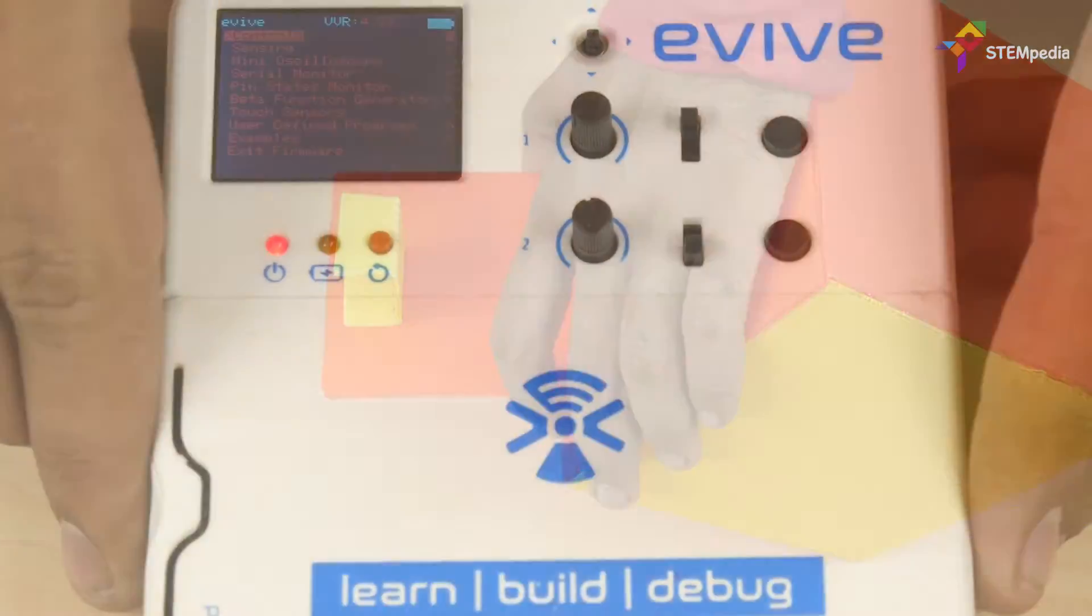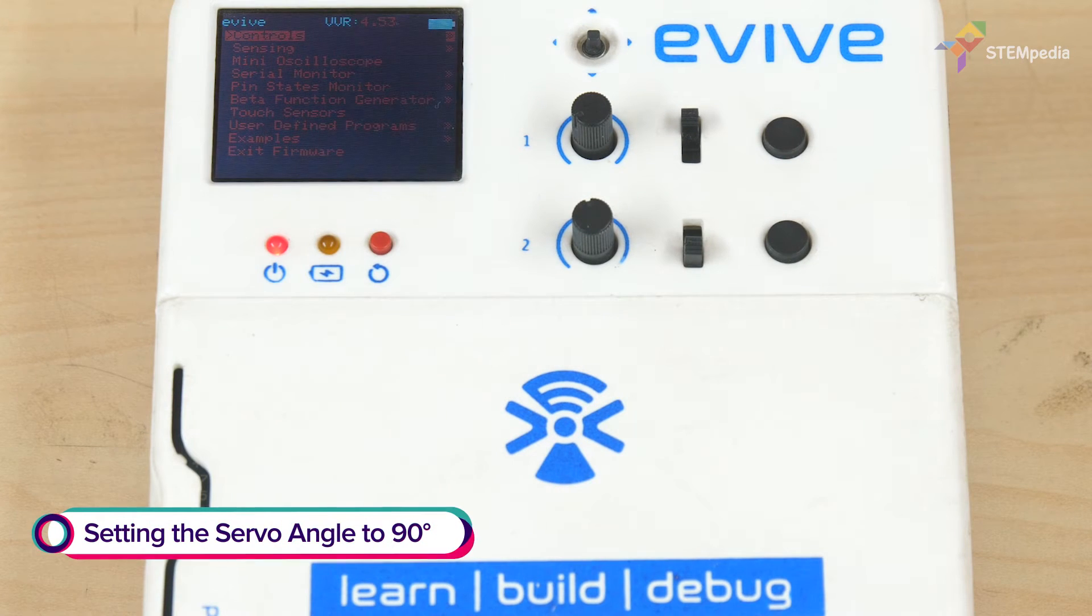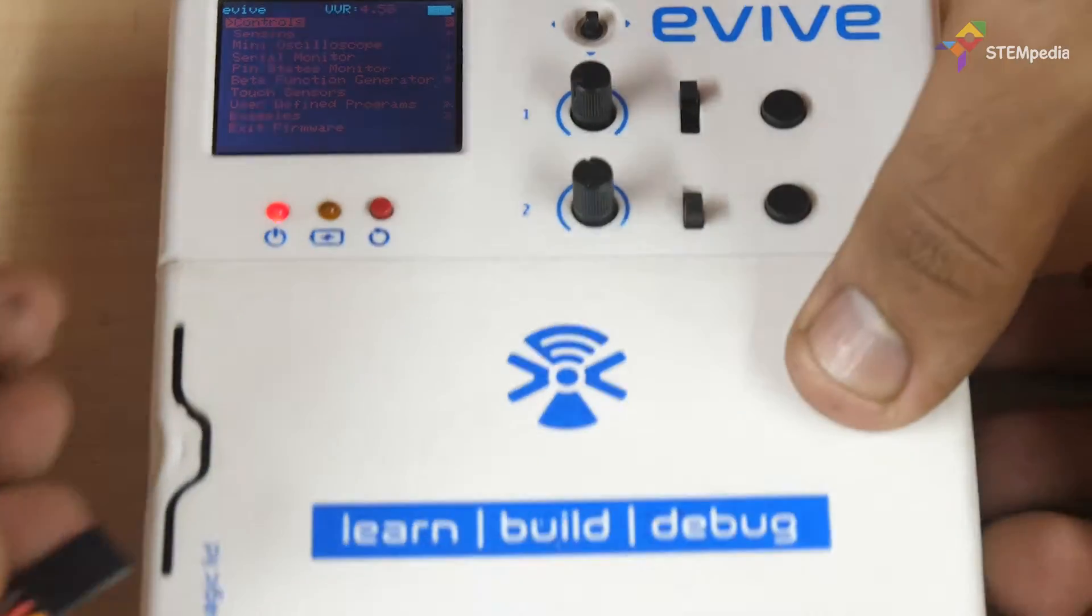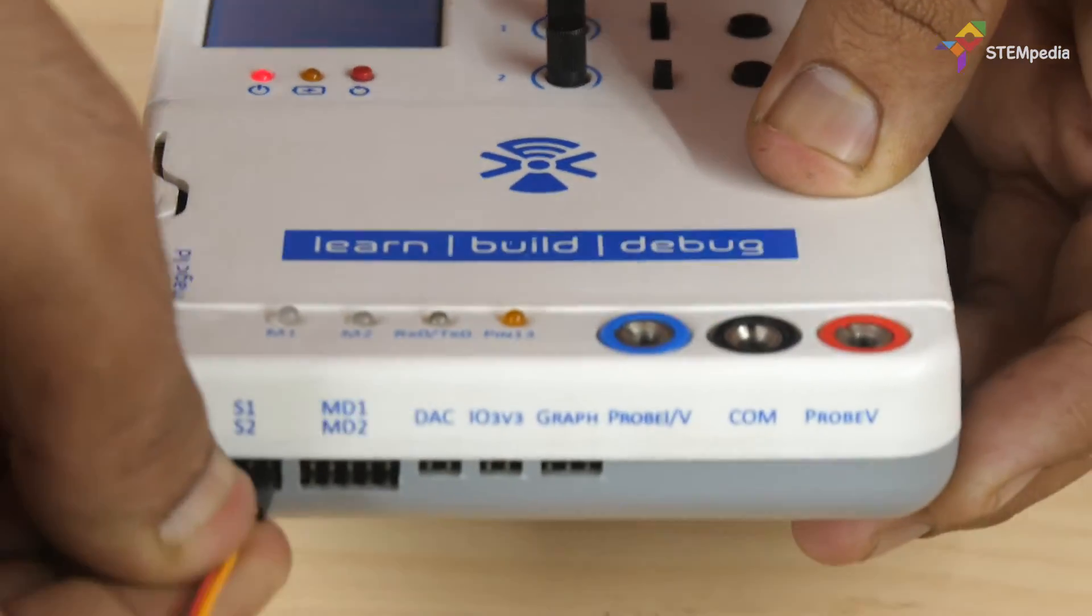Now let's complete the interlocking mechanism. For that, we first need to set the servo angle. Bring in evive and connect the servo motor to the S2 channel.